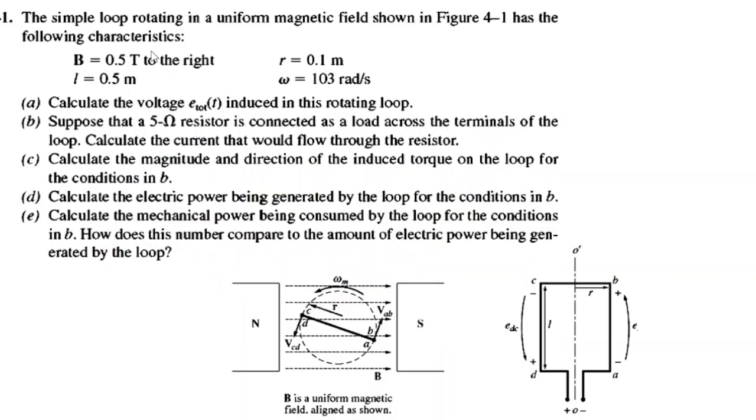The question is: a simple loop rotating in a uniform magnetic field shown in figure 4.1 has the following characteristics. So this is a wire loop. This wire loop is rotated inside a magnetic field and these are some of the parameters which we will discuss in the next slide, and we have to calculate these five parameters.